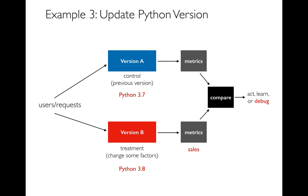A-B testing can also be used for debugging. Sometimes we expect different versions to be essentially equivalent — for example, if you built your web app on Python 3.7 and want to upgrade to Python 3.8. You expect no difference since you aren't using any new 3.8 features, but you can't be sure. Maybe switching to Python 3.8 makes certain things run a little slower, and then people make fewer purchases. So we can use A-B testing to debug very subtle things and see if a supposedly neutral change actually has unforeseen consequences.